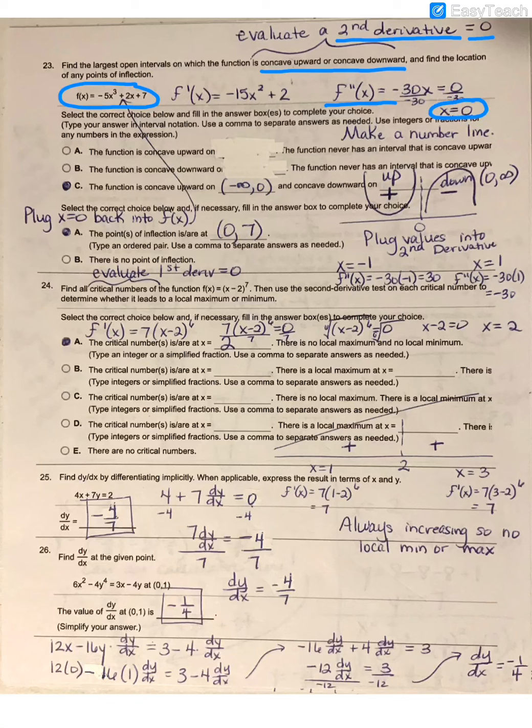Now I will make the number line just like I do with the first derivative to figure out my concavity. Here is my number line with a partition at 0.